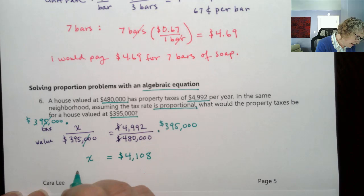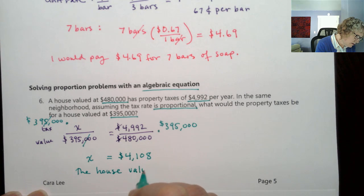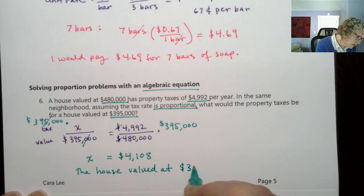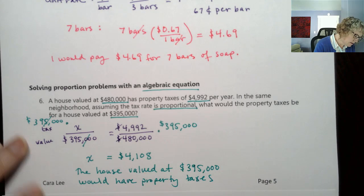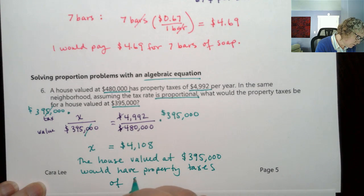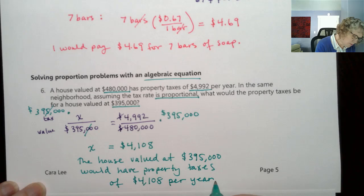So the house that is valued at $395,000 would have property taxes of $4,108 per year.